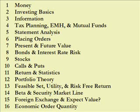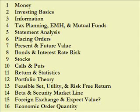Then the mathematics starts. We look at what statistics are about, portfolio theory, something called the feasible set, utility and the risk-free return, and then we take this to something called beta and the security market line, and why you really should not pick stocks but just hold indexes of one kind or another. We go to foreign exchange and how values themselves are quite a quandary, and then the economic order quantity.